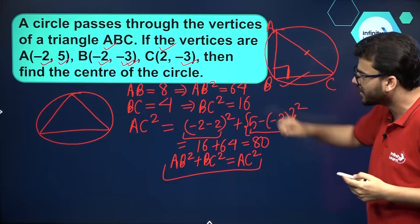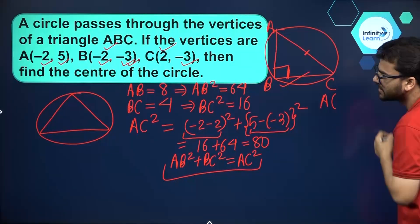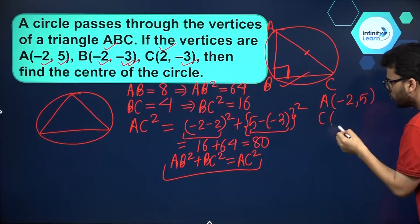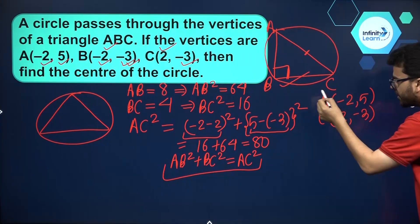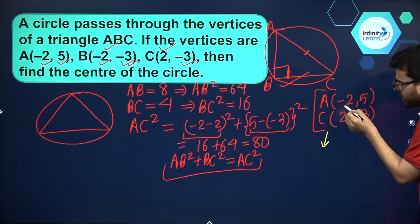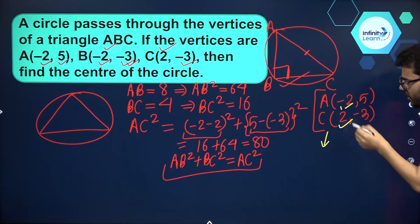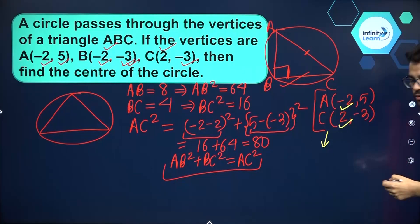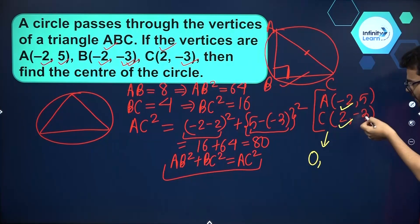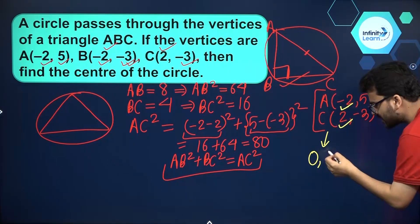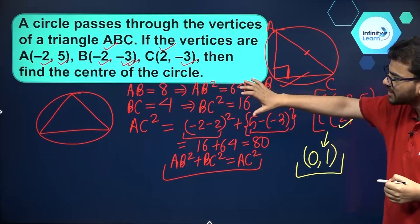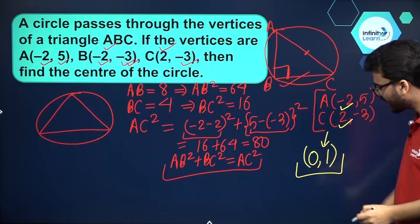The coordinates of A are (−2, 5) and C are (2, −3). The midpoint x-coordinate is (−2 + 2) / 2 = 0, and the y-coordinate is (5 + (−3)) / 2 = 2/2 = 1. So the circumcenter — the center of the circumscribed circle — is (0, 1). That is the answer.